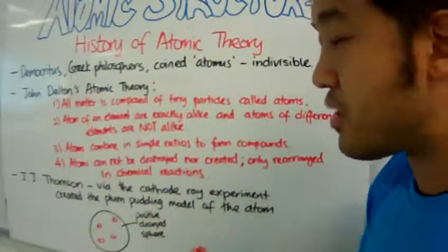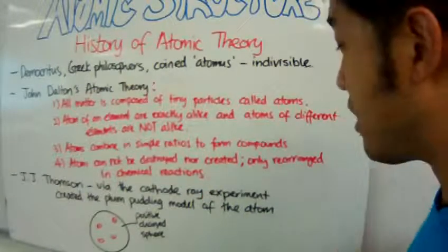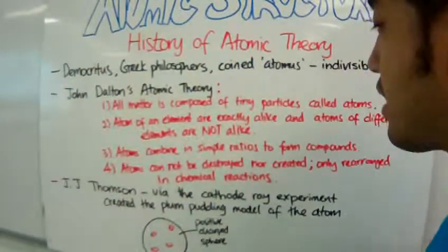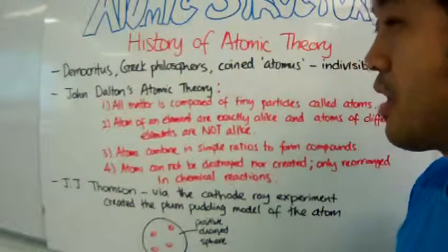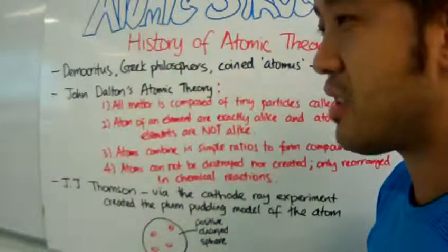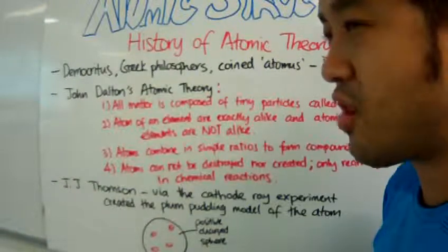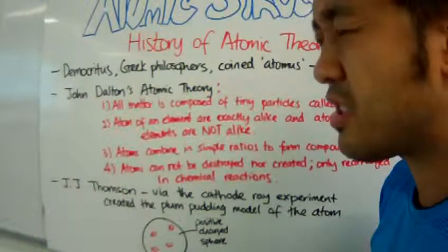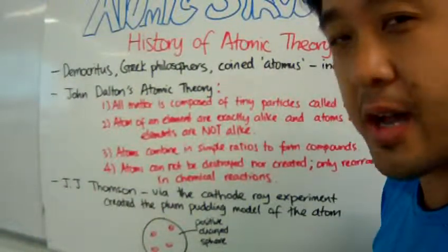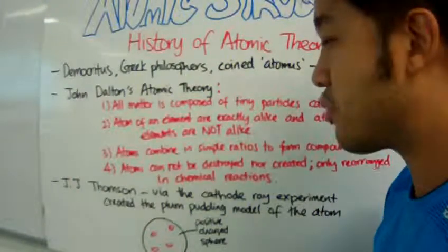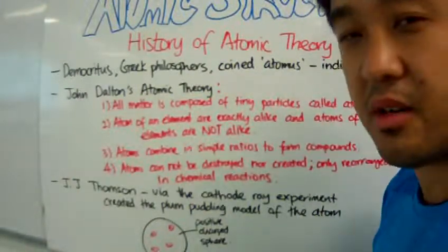But we still really didn't know what the atom looked like. So not long up ahead, in turn of the 1900s, people began to rush to decipher what the atom looked like. And it started with J.J. Thomson, without the P.